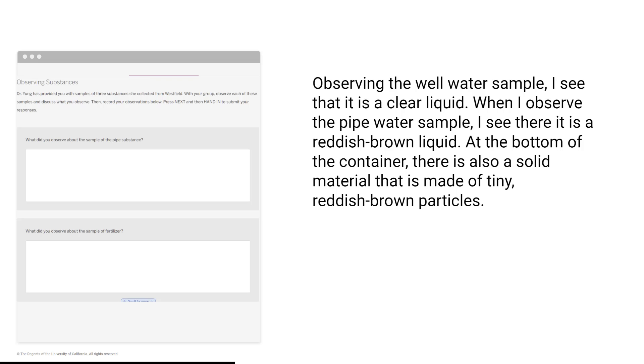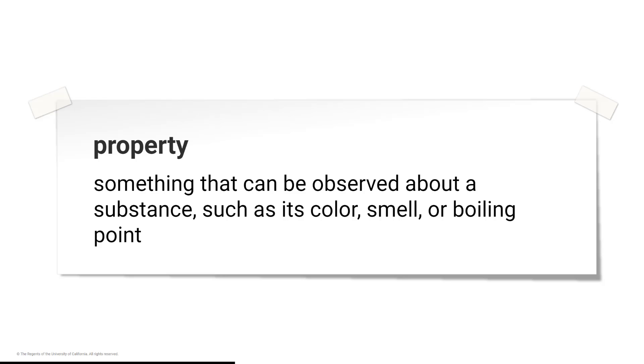Students make observations of the three substances. Property: something that can be observed about a substance, such as its color, smell, or boiling point.